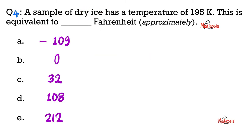Next, a sample of dry ice, which is solid carbon dioxide, has a temperature of 195 degrees Kelvin. This is equivalent to blank Fahrenheit. Now, how can we answer this? Well, I want it in Fahrenheit, so it's 9 over 5, open parentheses, temperature in Kelvin minus 273.15, close parentheses. When you do all of this, you add 32.